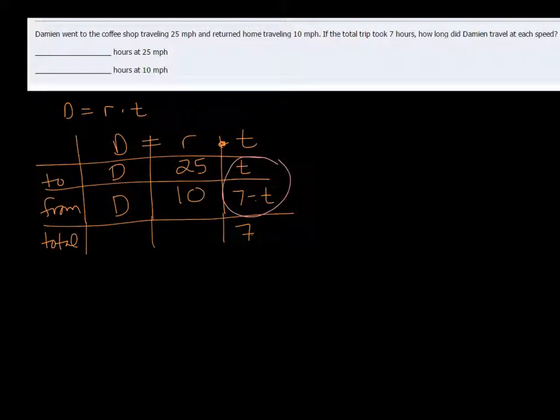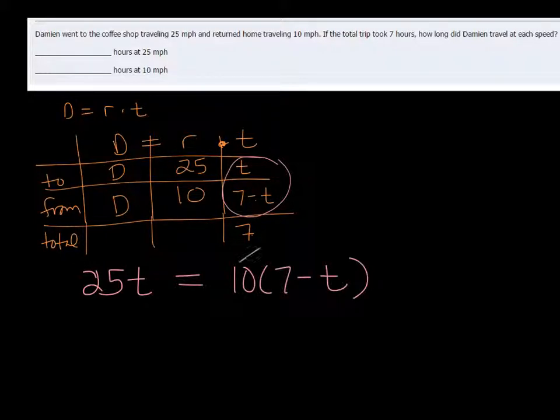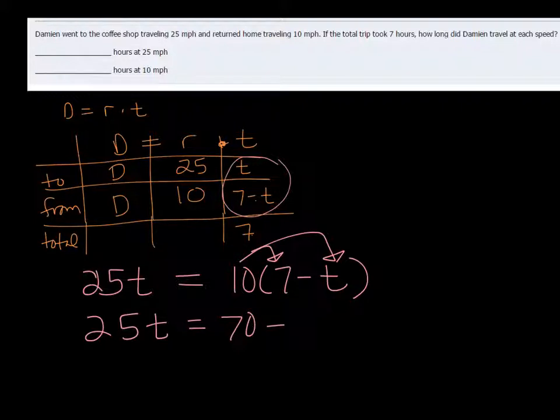Because these are both going to be equal, we get 25T for one distance. And that's going to be the same as 10 times seven minus T. So we distribute, and we get 25T is equal to 70 minus 10T.